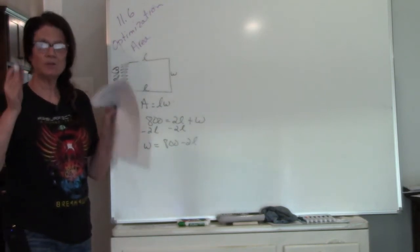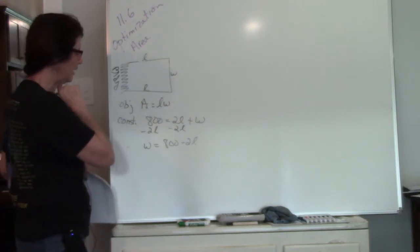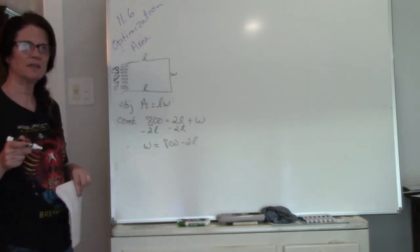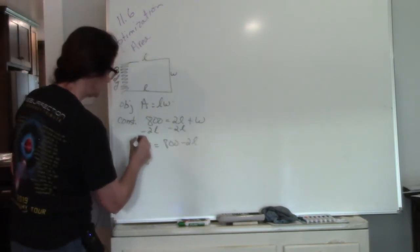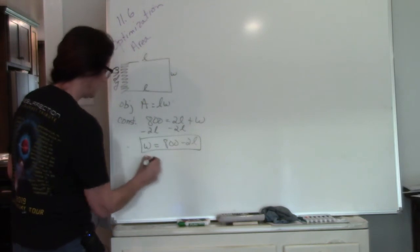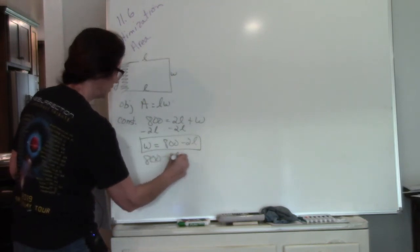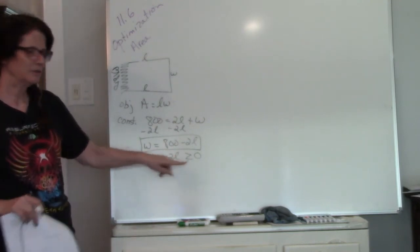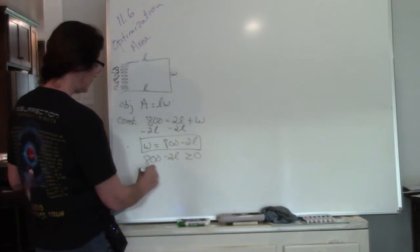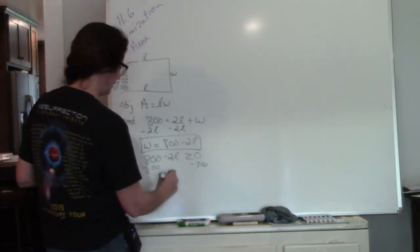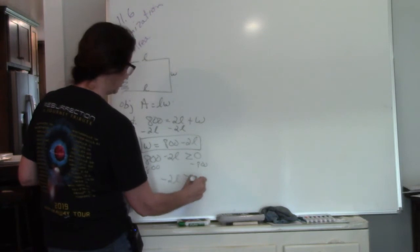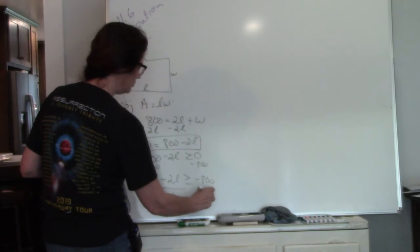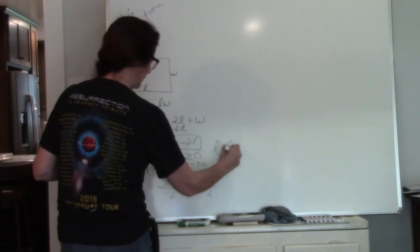Got my picture, got my objective, got my constraint, solved my constraint for one variable. Now I need to find my endpoints. My width can only be positive, so I'm gonna set my constraint to greater than or equal to 0. I only want positive numbers. So 800 minus 2L is greater than or equal to 0. Subtract 800 from both sides, I get negative 2L greater than or equal to negative 800. Divide both sides by negative 2. When I divide by a negative, it flips the sign.